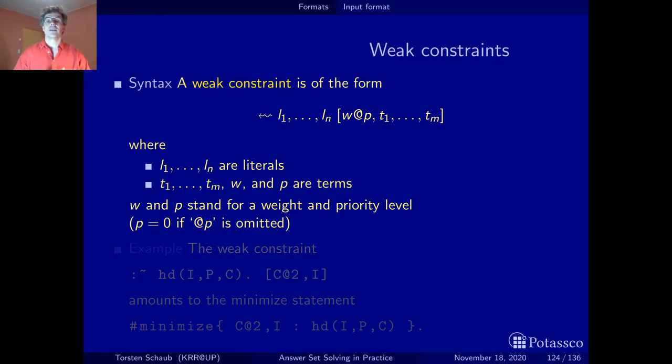Even though it reads nicely declarative, this is an instruction to the ASP solver to perform optimization. It optimizes the sum of the weights of the violated weak constraints. If you don't want any lexicographic optimization and just want one single flat objective function, you simply leave this out. If you leave it out, the system sets it to zero.